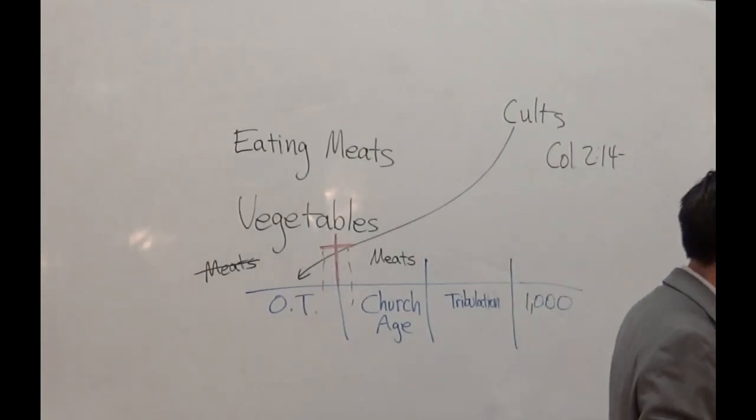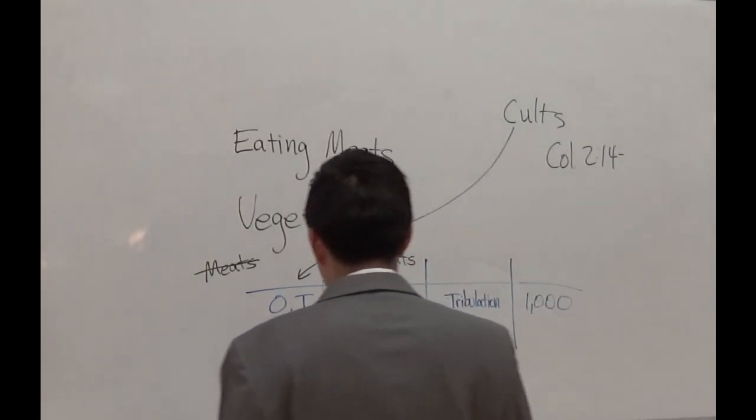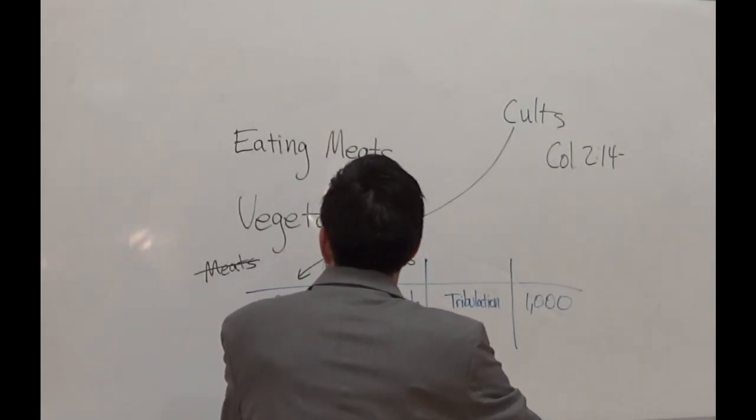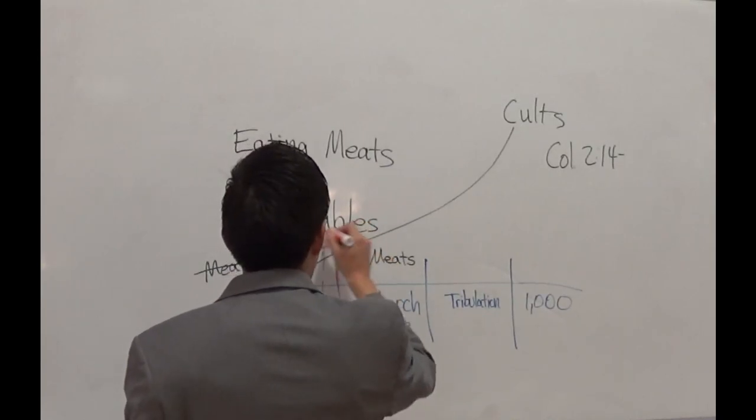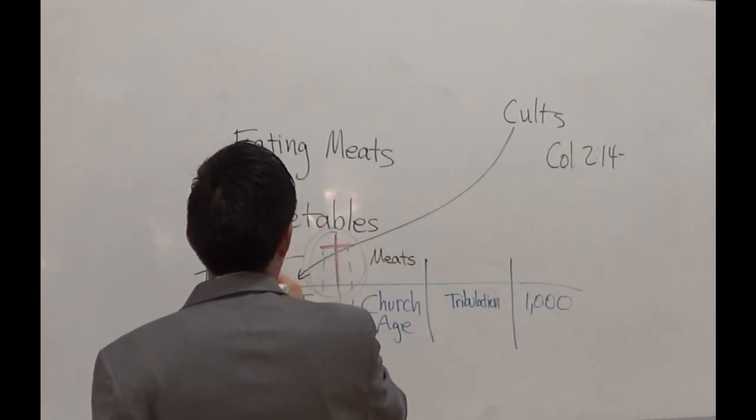Let's start off at verse 14. Blotting out the handwriting of ordinances that was against us. So that's the law right there. Jesus blotted it out. How? That was against us, which was contrary to us, and took it out of the way, nailing it to his cross. So the cross right here, the cross right here did away with this law here.